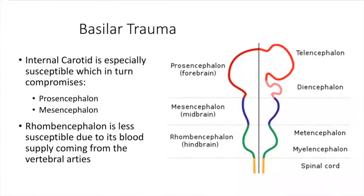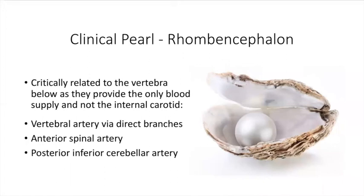She focused on basilar trauma. She felt that the internal carotid, if damaged, would compromise the prosencephalon and mesencephalon — the more advanced parts of our brain and the midbrain. She felt the rhombencephalon was less susceptible because its blood supply was coming from the vertebral arteries. As a clinical pearl from Dr. Weaver: she related the vertebra below because they provided blood supply via the vertebral artery — not the internal carotid — with direct branches including the anterior spinal artery, posterior inferior cerebellar artery, and direct branches going to the rhombencephalon.